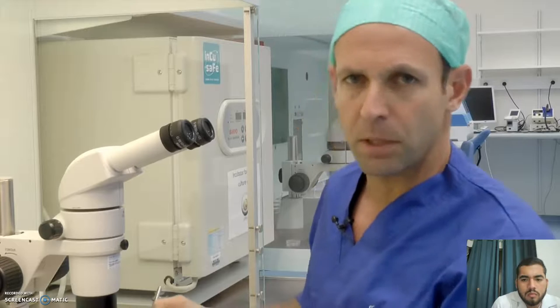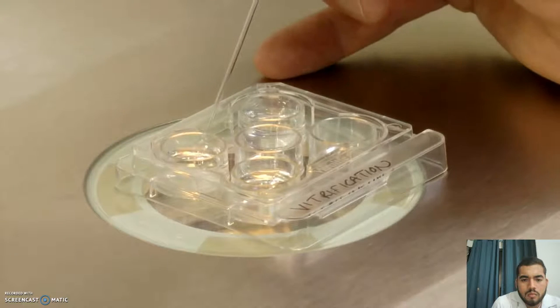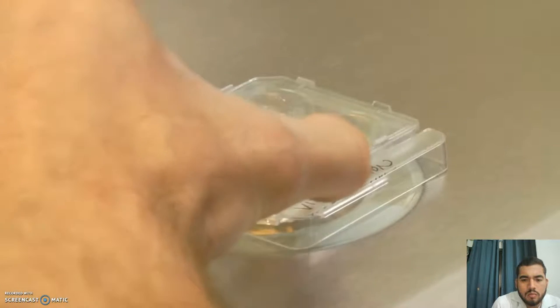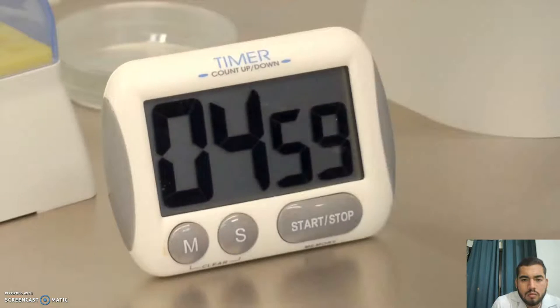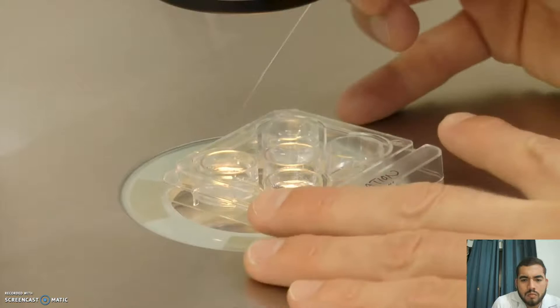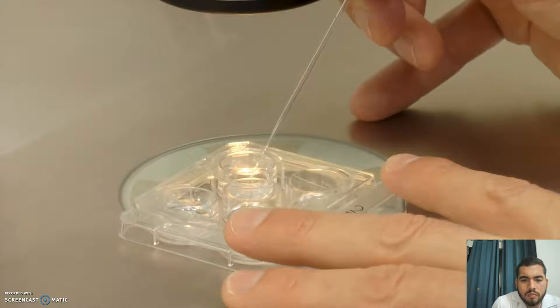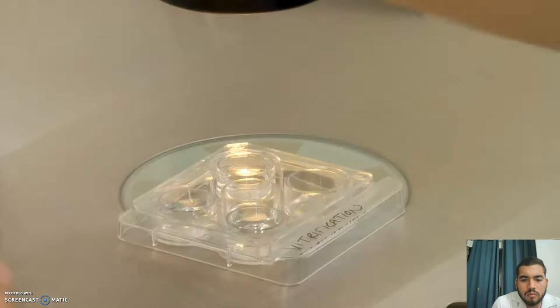When you start the vitrification procedure, place your oocytes in the first solution for a minimum of 5 minutes. Depending on the number of oocytes you have, the procedure will take between 5 and 20 minutes. After 5 minutes in the first solution, move your oocytes into the second solution. The oocytes will remain in the second solution for between 2 and 5 minutes. What we are looking for during this step is re-expansion of the oocytes.